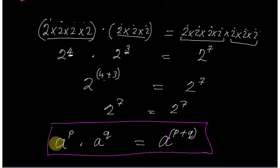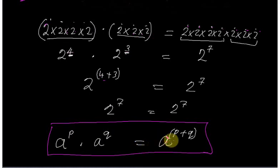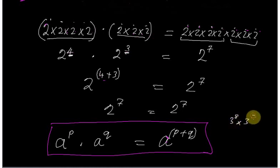If you change the base to 'a' and the exponents to P and Q — because we are not always multiplying twos — you get: a to the power P times a to the power Q equals a to the power P plus Q.